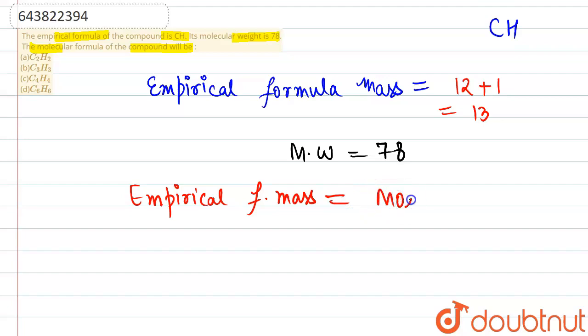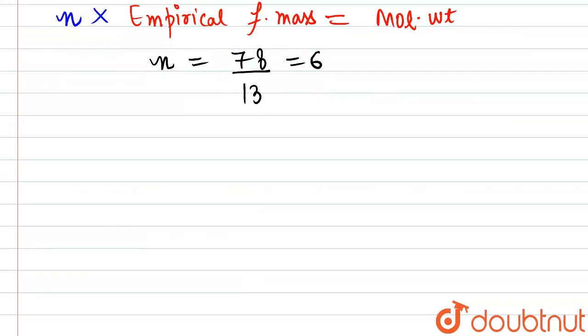Molecular weight equals empirical formula mass multiplied by the factor n. First of all, we will find the n value. This will be equal to molecular weight divided by empirical formula weight. From here, n value comes out to be equal to 6.